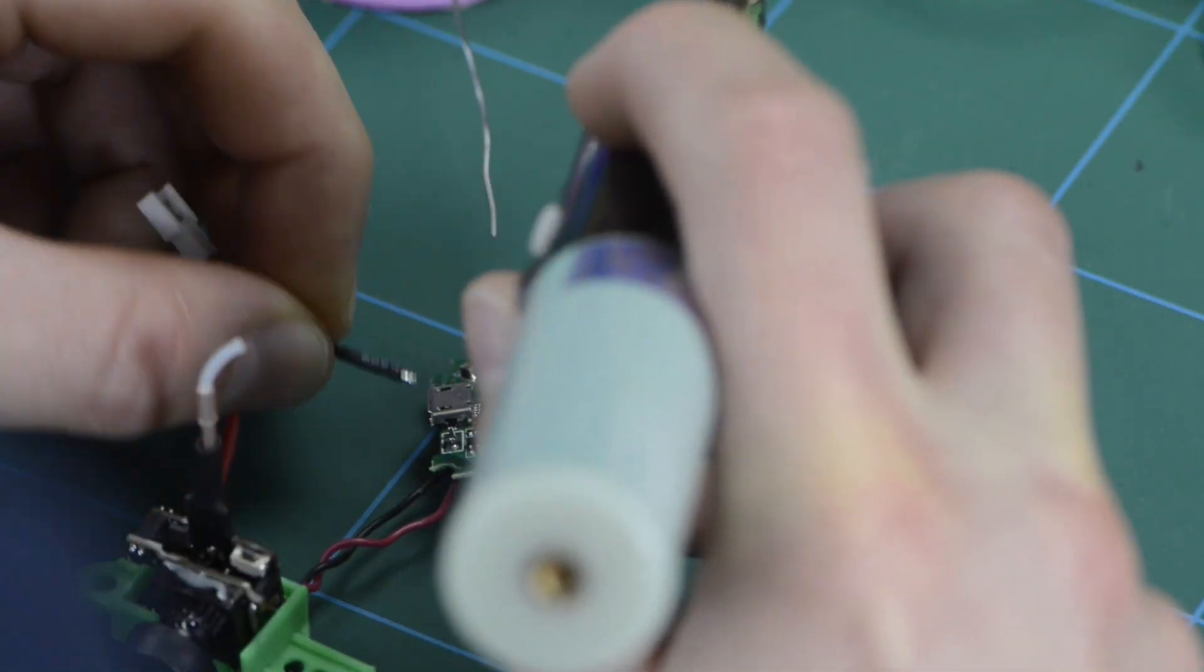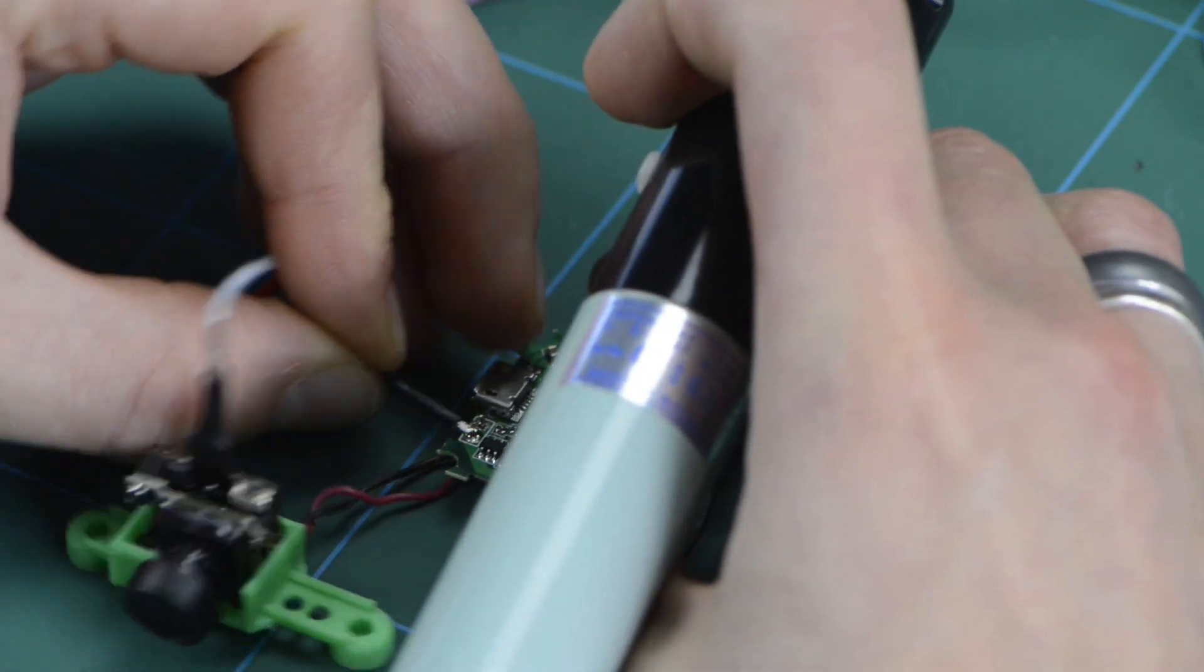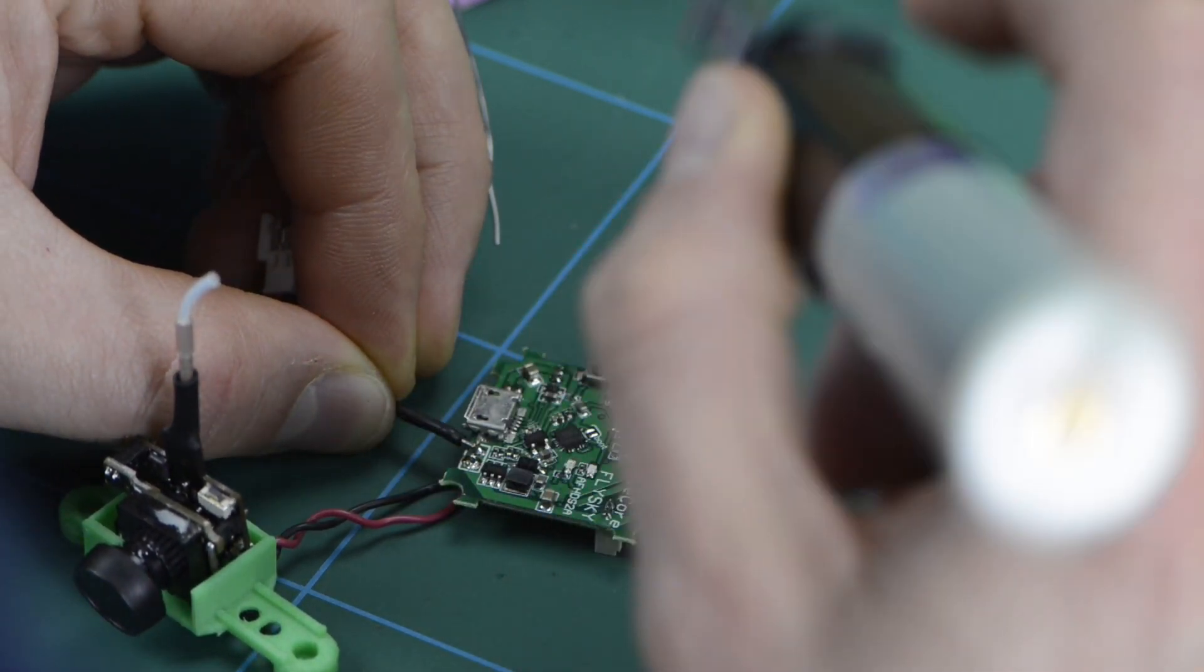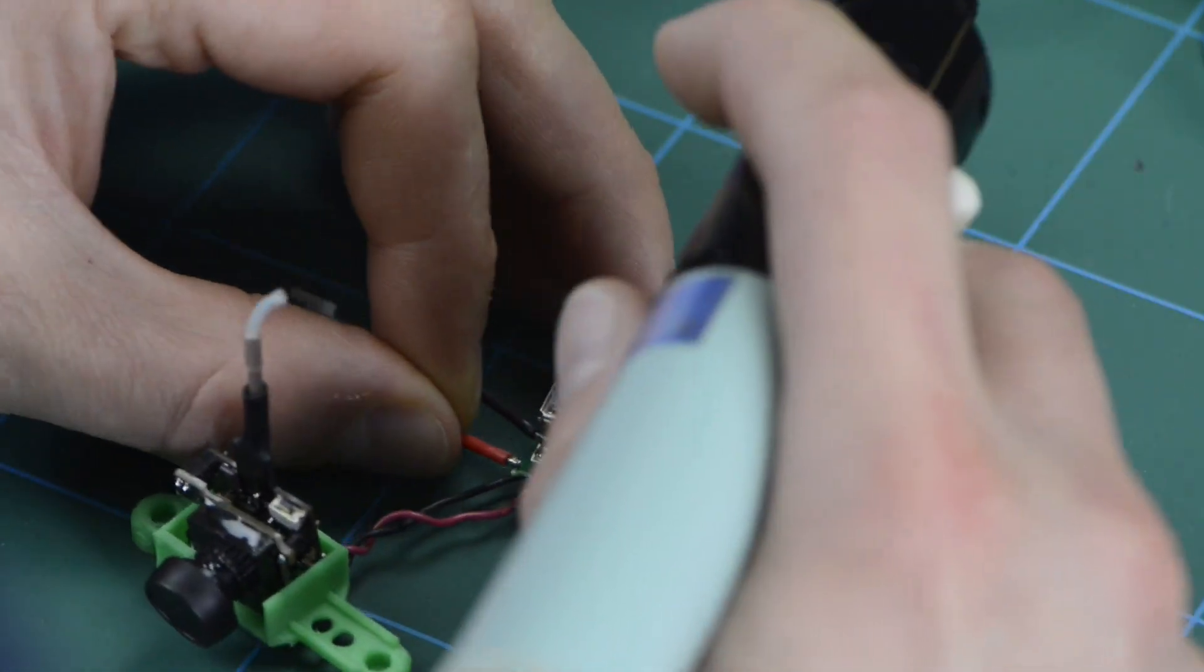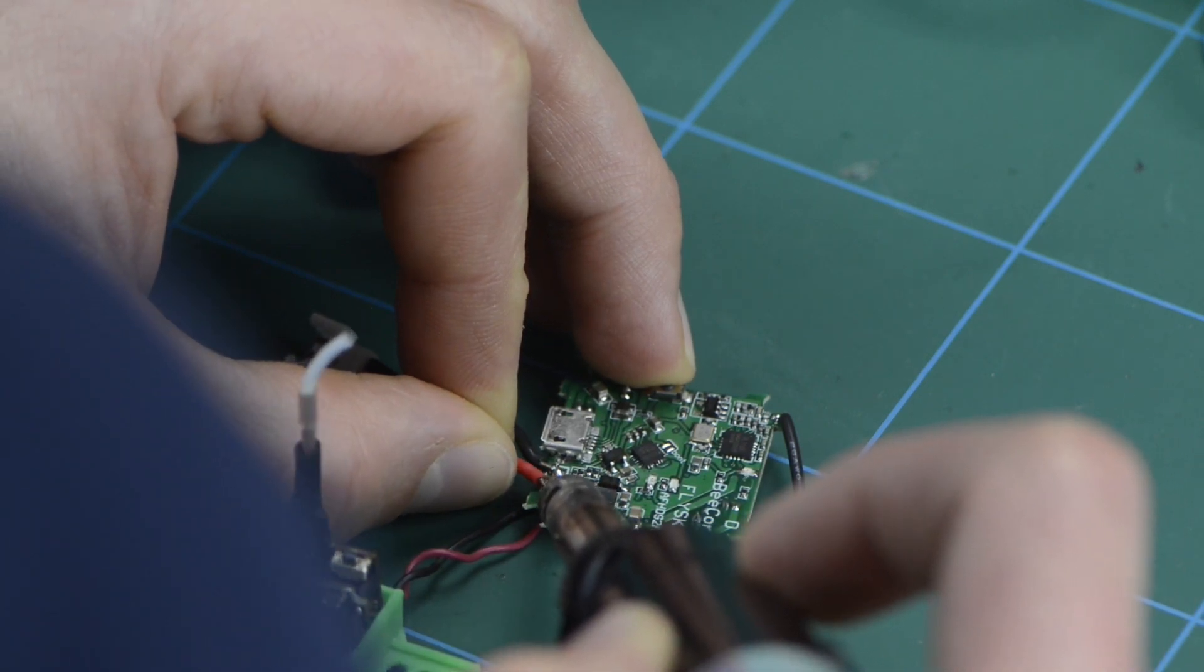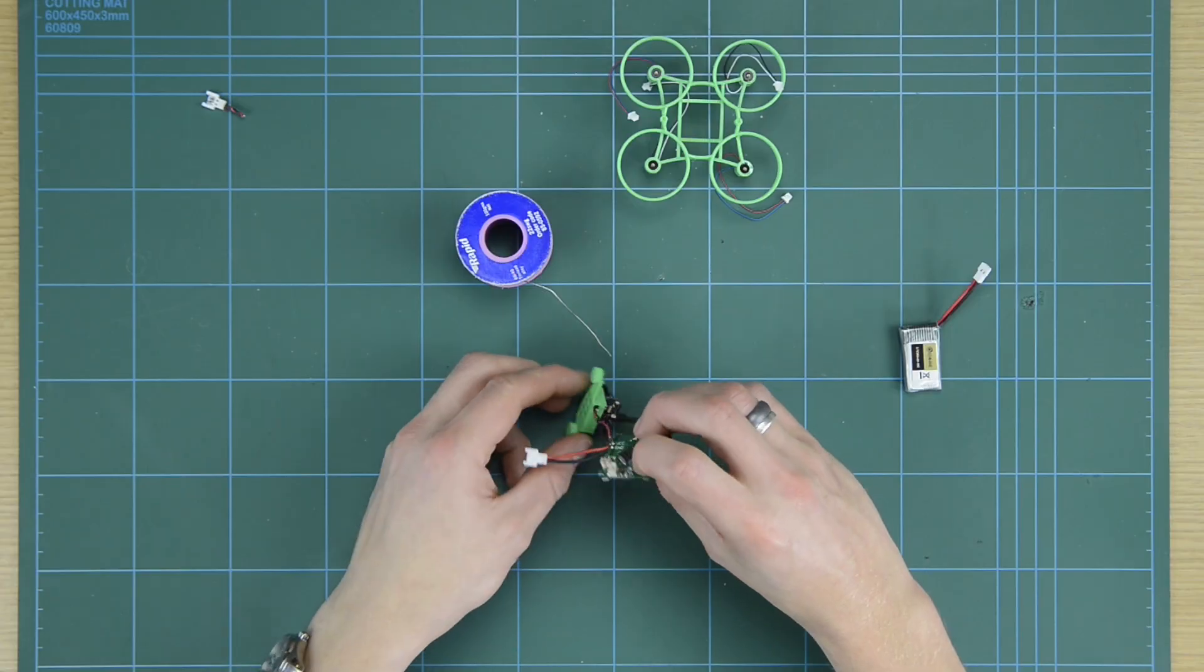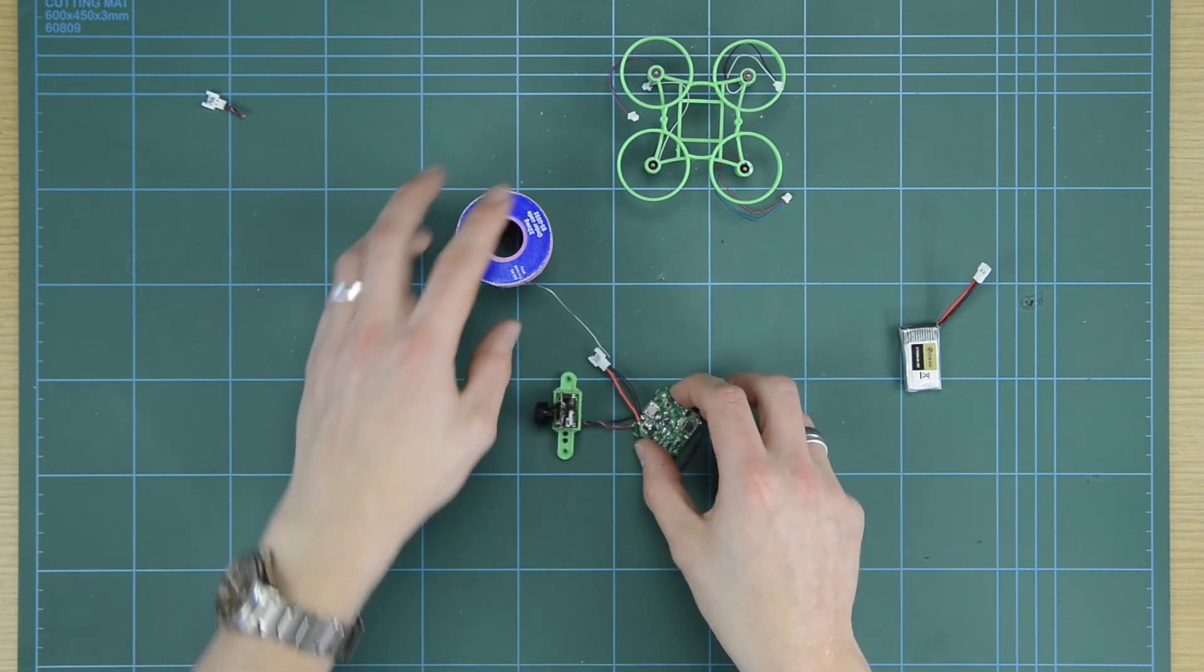It's a bit fiddly this part. And the wires want to turn everything away from where you want it to be. Okay, and there we go. That's soldered with your battery connector and camera.